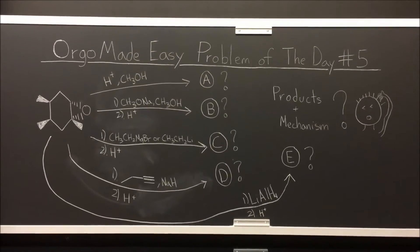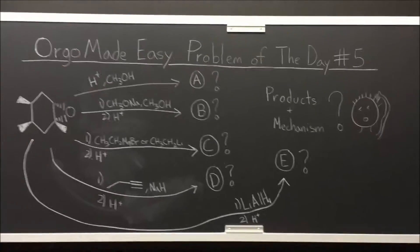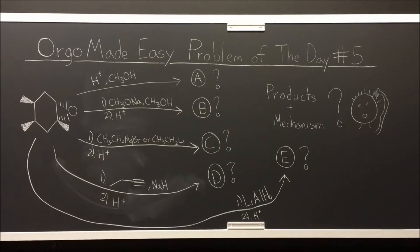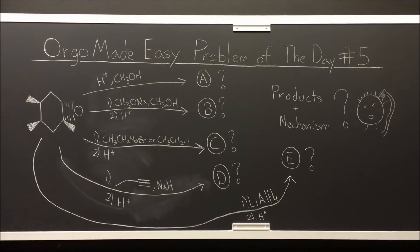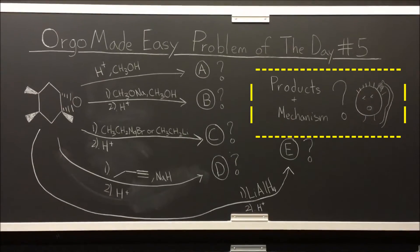So here we go. In problem of the day number three we made epoxides. Epoxides are made only to be broken open — because what's the fun of keeping an epoxide if it's not going to be broken open? So now we're going to break it open with these five different reagents. Your job is to come up with the products of pathways A, B, C, D, and E, and also the mechanism behind how those products are formed.